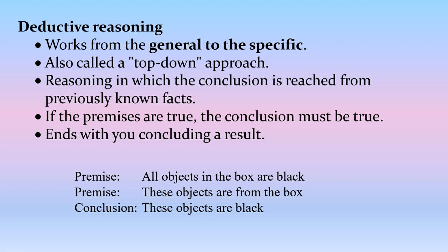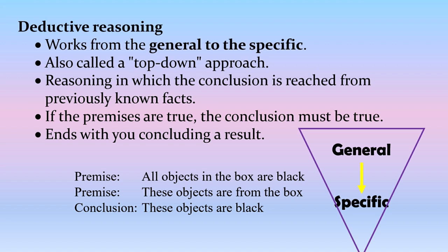Now if I've lied to you and not everything in the box is black, then my conclusion might be wrong — I might have pulled something red out of the box, but that's because one of the premises was false. So with deductive reasoning we go from general to specific: we start with a wide rule — all objects in the box are black — and arrive at a narrow conclusion — these objects are black.